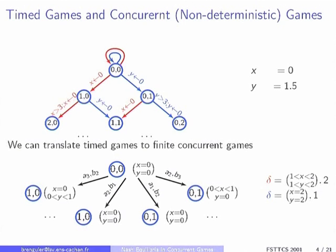I'm not going to detail this construction, but instead of suggesting a delay, you select an interval which corresponds to a region. This game is finite — it is a finite concurrent game because players are choosing actions in parallel at the same time. One important thing about this concurrent game is that it's non-deterministic, and I'm going to talk more about that later.